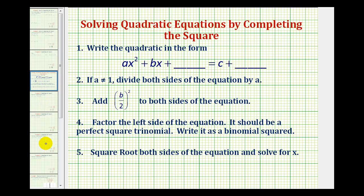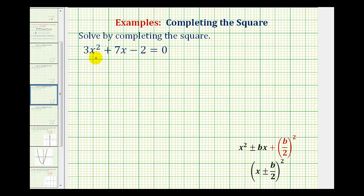Going back to our example, this will be more involved because our leading coefficient is 3. The first step is to move the constant term to the right side of the equation. To undo minus 2, we'll add 2 to both sides.